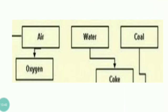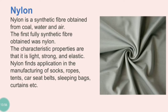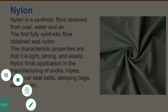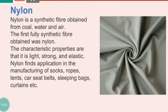Now if we talk about nylon — nylon is the first fully synthetic fiber. First fully synthetic fiber means there is no natural constituent in it at all. So the answer to 'first fully synthetic fiber' is nylon. In 1931, it was prepared from coal, water, and air. These three are the main constituents used to make nylon.